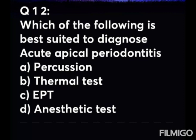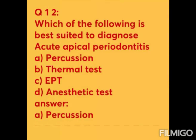Question 12: Which of the following is best suited to diagnose acute apical periodontitis? Option A: percussion. Option B: thermal test. Option C: EPT. Option D: anesthetic test. The answer is Option A — percussion. In acute apical periodontitis, percussion is used to diagnose this condition.